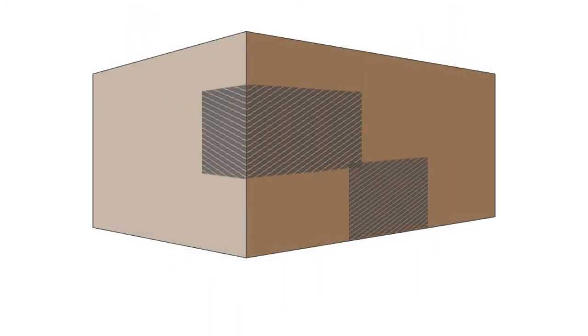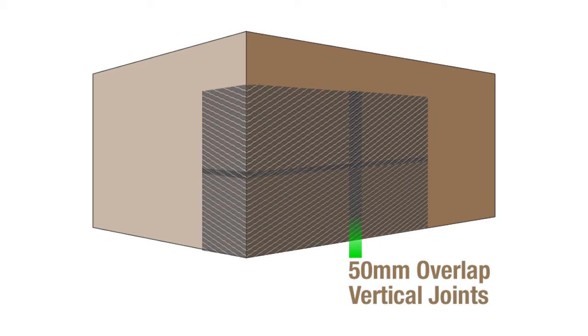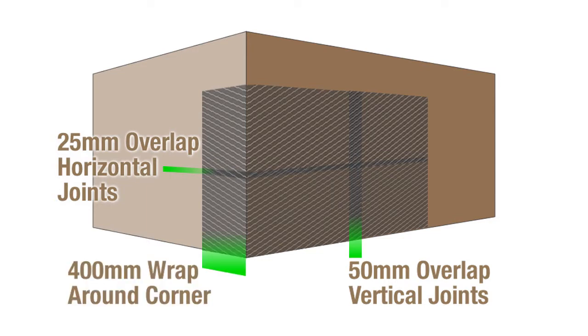The expanded metal mesh must overlap 50mm at vertical joints and 25mm at horizontal joints and wrap a minimum of 400mm around corners to a framing member or stud.